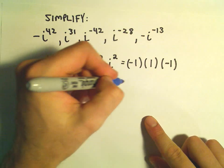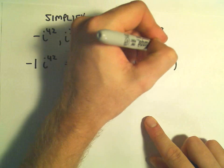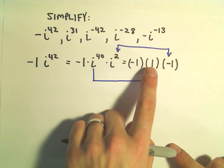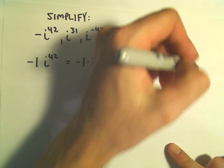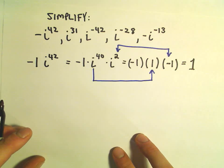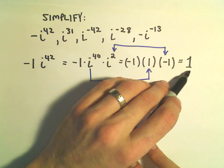So again, our i to the 40th is turning into positive 1 and our i squared is turning into negative 1. And now we can just simplify: we have negative 1 times 1 times negative 1. That's simply going to give us positive 1 as our solution. So negative i to the 42nd power is a weird way of writing the number 1.